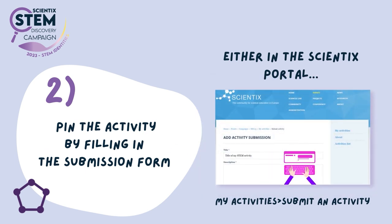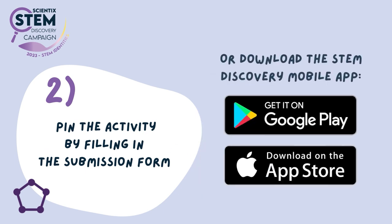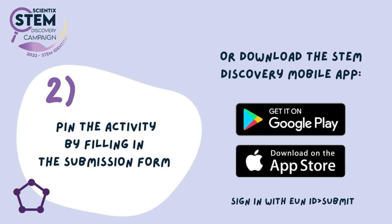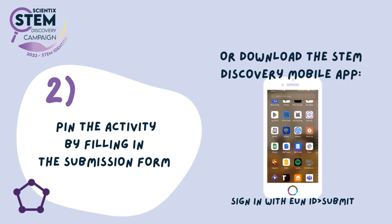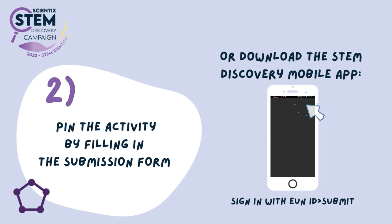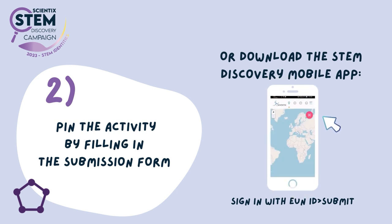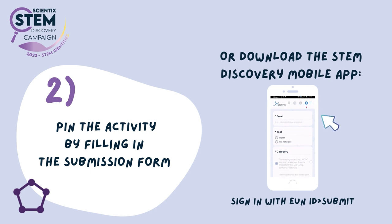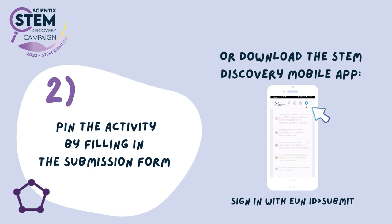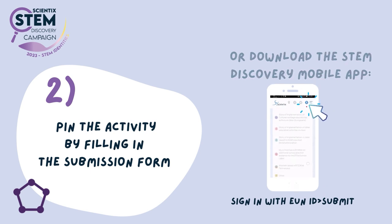Or you can download the STEM Discovery campaign app from the mobile app store of your choice. In the app, sign in with your Scientix username, then click on the blue circle with the arrow in the top right corner and fill in the information as instructed.